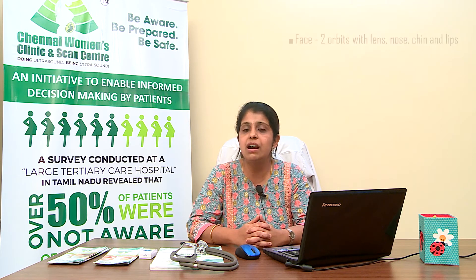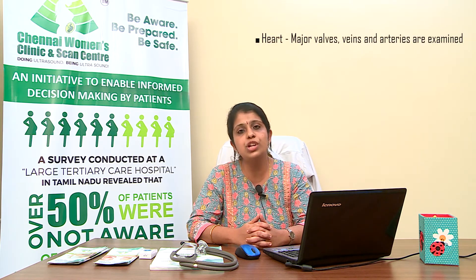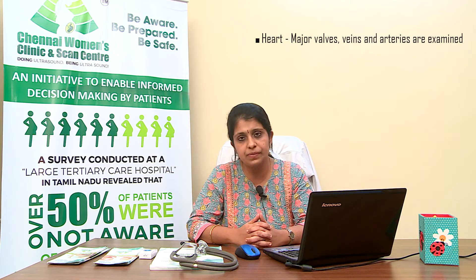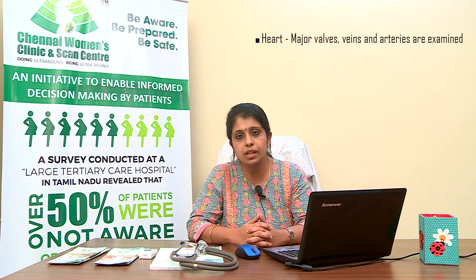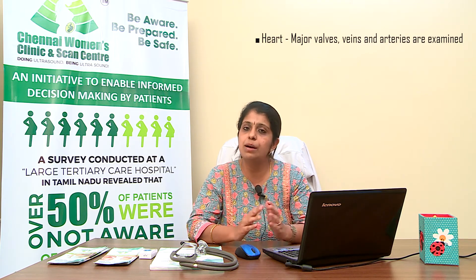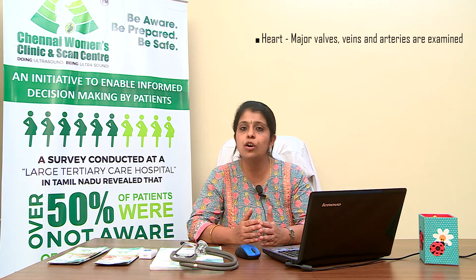Then we come down and see the heart of the baby. Heart is very important. We see whether there are four chambers of heart — two upper chambers called the atria and two lower chambers called the ventricles. There are two valves connecting these upper and lower chambers, and two major blood vessels connected to the right and left sides of the heart, carrying oxygenated and deoxygenated blood.